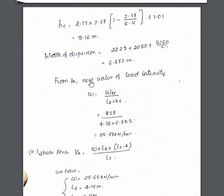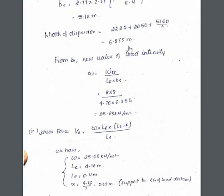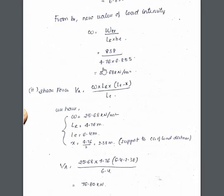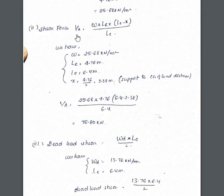Width dispersion again we have to take 2225 plus 2050. Initially we have added these two only. Here also 5160 by 2, as I said it is half of distance, half of the wheel, 6.825 meter. B new value of load intensity, as B changes again the load intensity will change. W is equal to W tracked by LR into B. All the values are same but B differs. Substitute B value and get the value of load intensity 25.68. Now find out the shear force. V is equal to W into LR into LE minus X by LE. Here all the values are known, so substitute all the values and you will get the shear force as 26.80 kilonewtons.